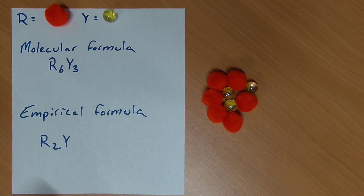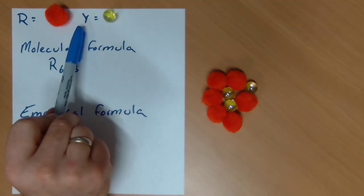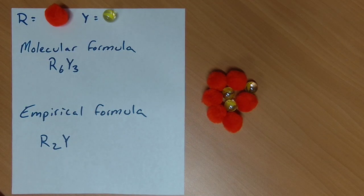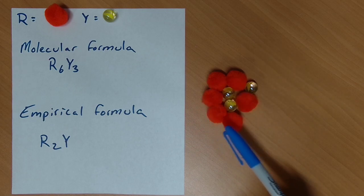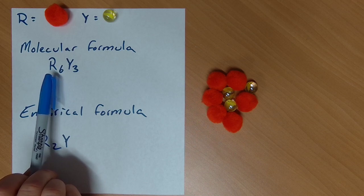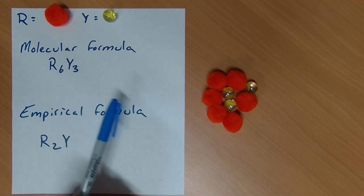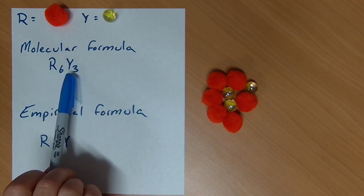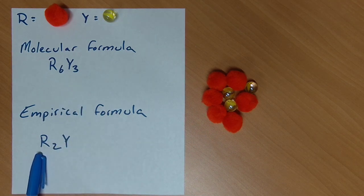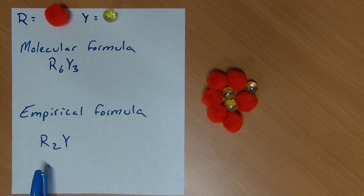So I have here these different objects, R for red, Y for yellow, and pretend that this is some sort of molecule over here. What I want you to notice is that I'm going to say that my molecular formula would be R6Y3. The empirical formula, I want to remind you, is just the simplest whole number ratio.